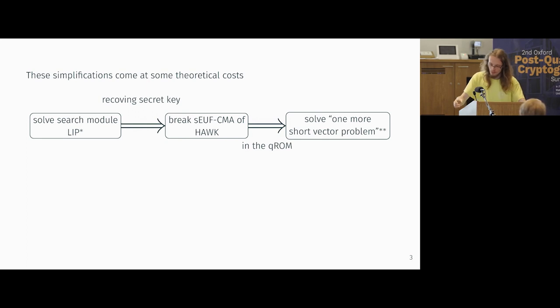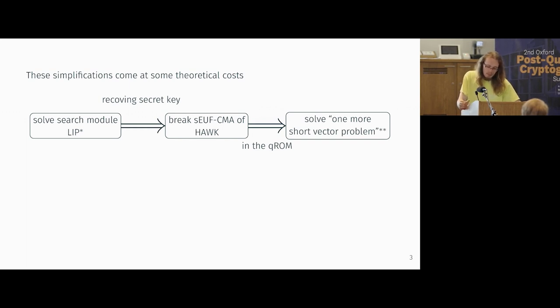And these simplifications, they unfortunately come at some theoretical costs. So this is our sort of theoretical pipeline, if you will. In the middle, you have the strong existential unforgeability of HAWC. And on the left, I haven't told you what this problem is yet, but if you solve something called the search module LIP problem, you can recover the secret key. And if you can break this existential unforgeability of HAWC, then you can solve this so-called one-more-short-vector problem.